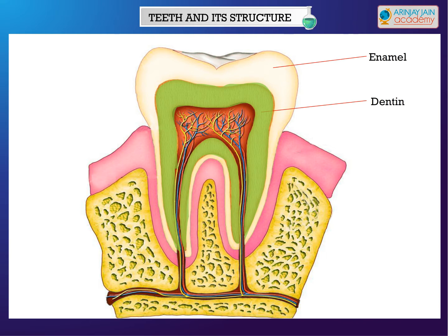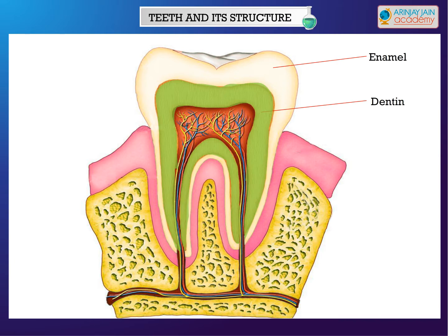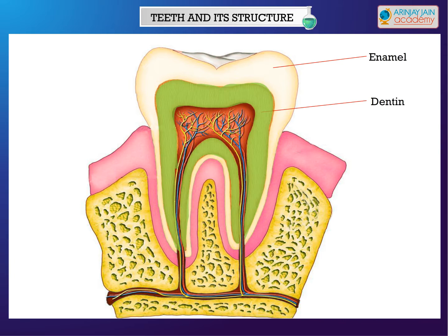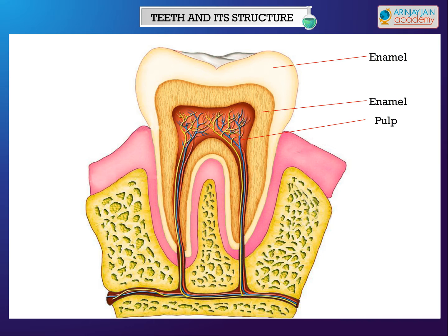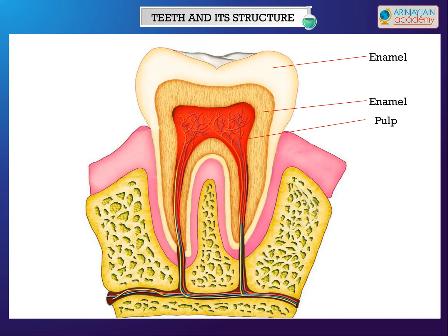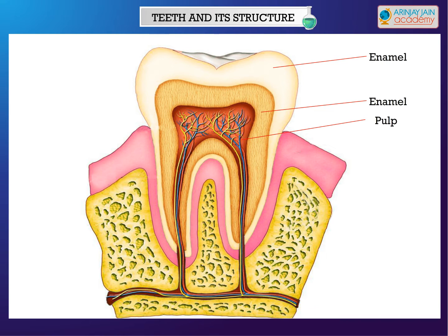Below the enamel is the dentin. It supports the enamel on the teeth. The dentin is a hardened bone-like material. Inside the dentin is the soft pulp. It has nerves and blood vessels. The tooth receives nourishment from the pulp, and it also sends signals to the brain.